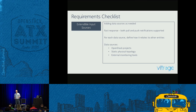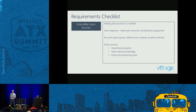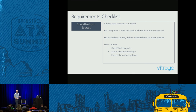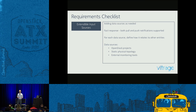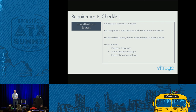The first requirement is extendable input sources. To provide a holistic view of your system, you need as many data sources as possible — each brings more information about the status of resources, the relationships between entities, and the alarms. We support both pull and push notifications for fast response. Currently, we support OpenStack data sources such as Nova, Neutron, and Ceilometer, static configuration files — for example, to configure how switches are connected to hosts — and external monitoring tools like Nagios and Zabbix.